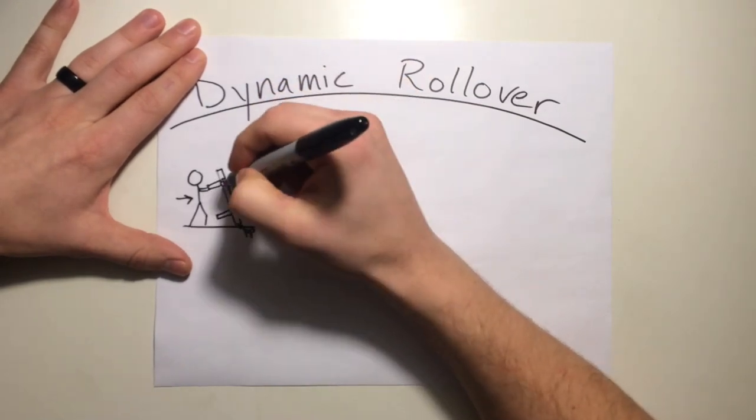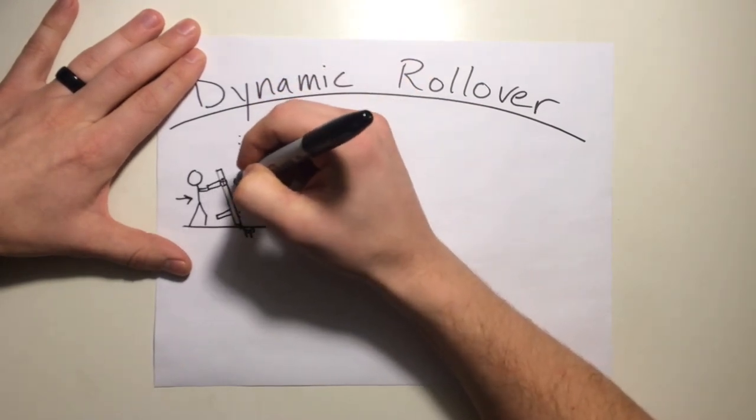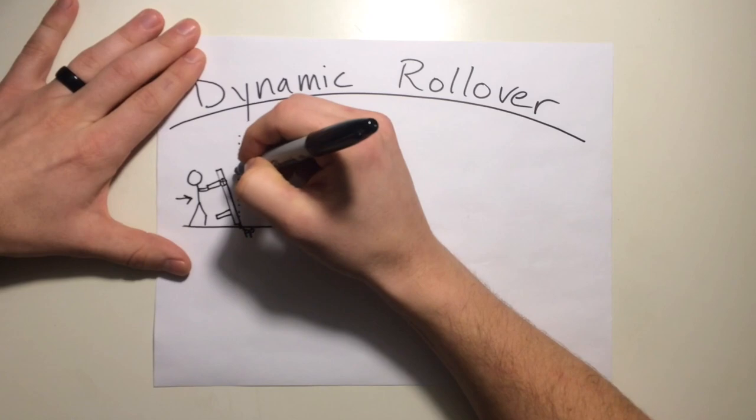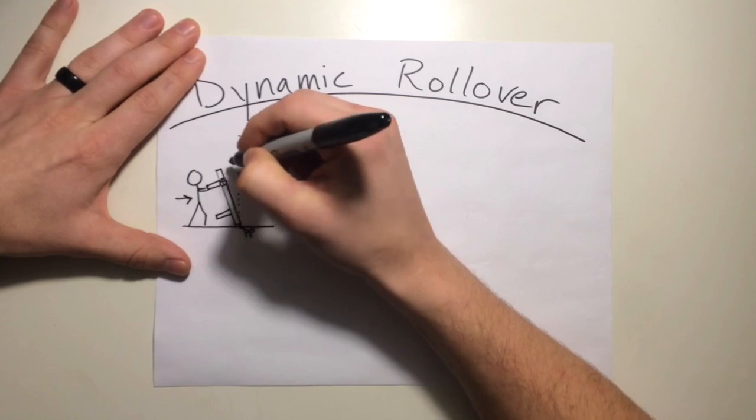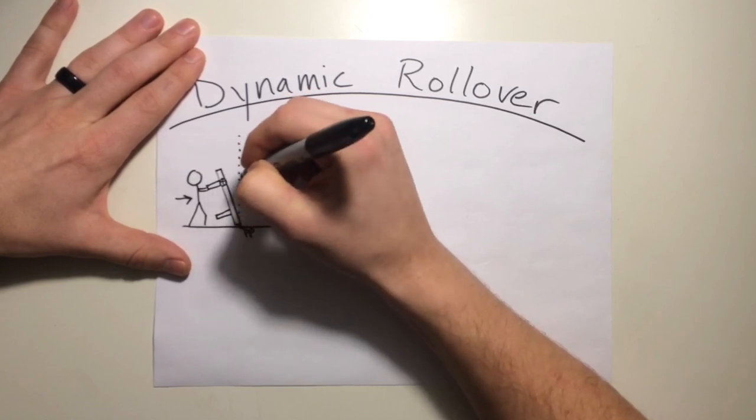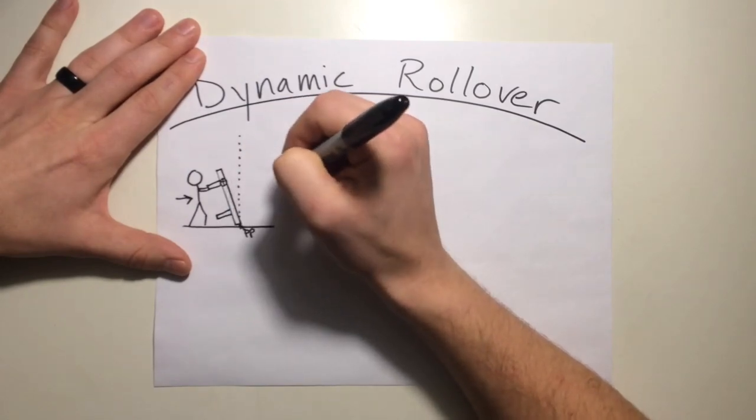So at this point, if the center of gravity is on this side of the pivot point, if I were to release the object it would continue to fall to the left. If the center of gravity would pass on this side of the pivot point, the object would fall to the right.